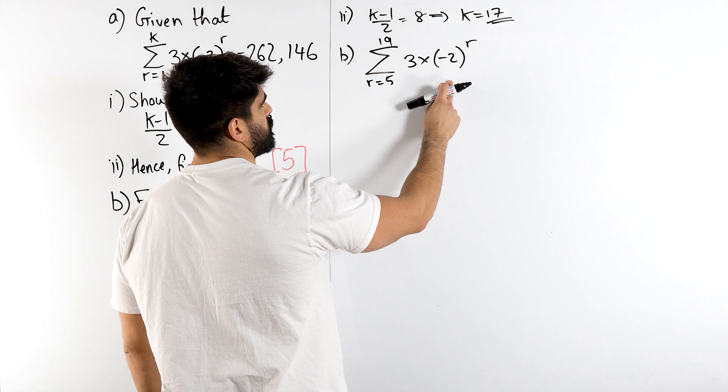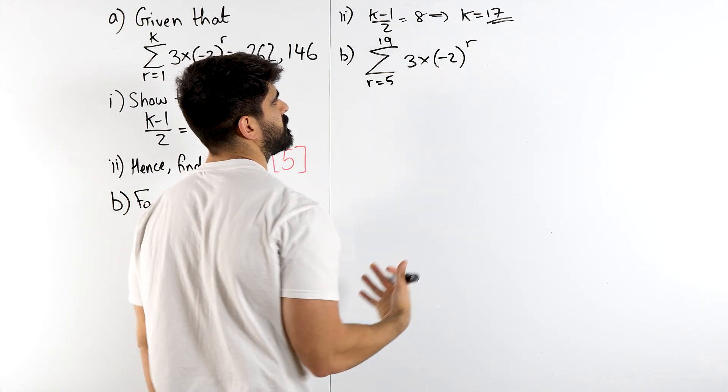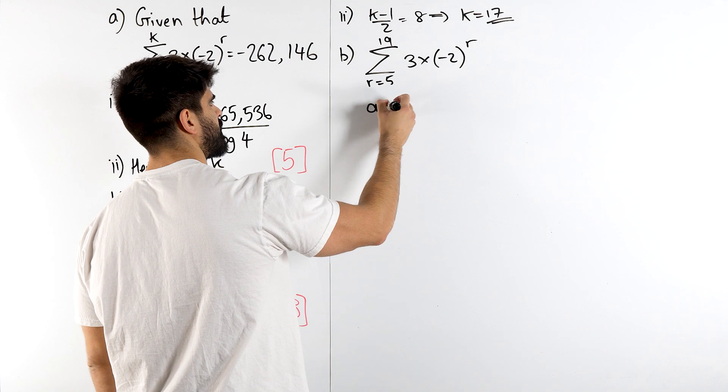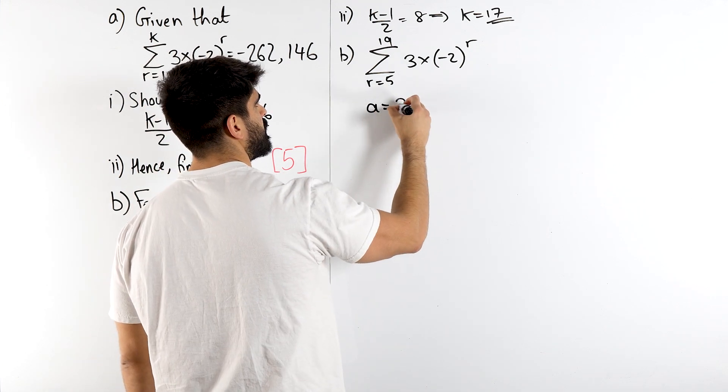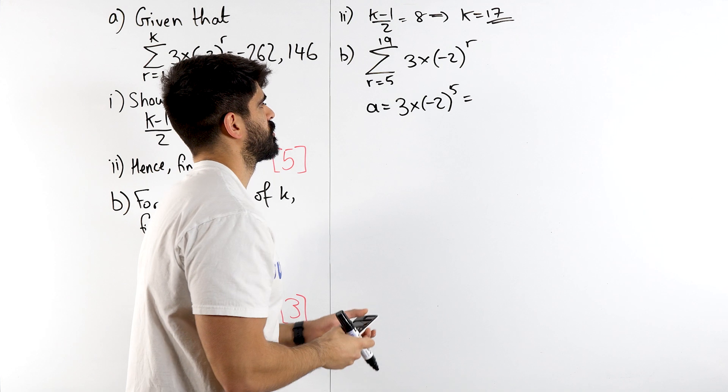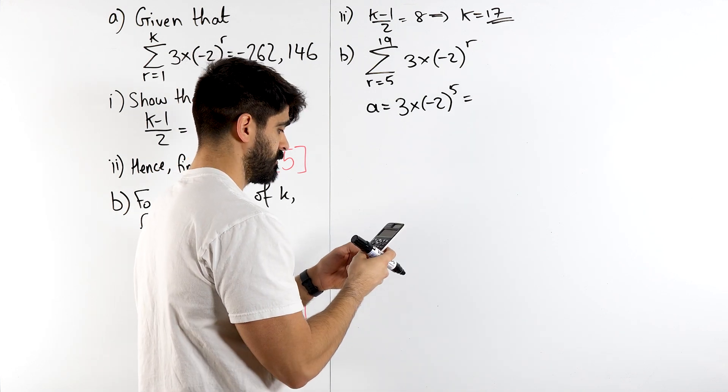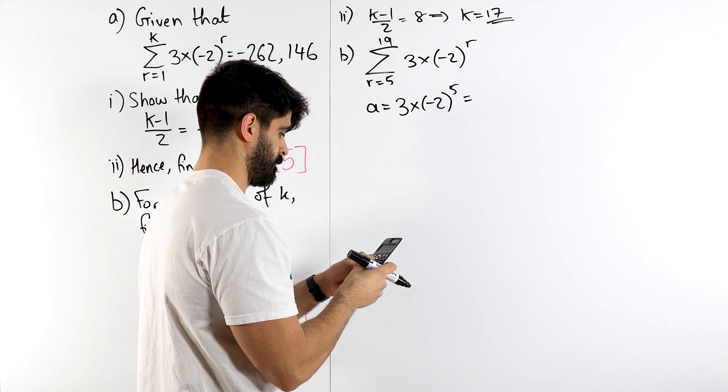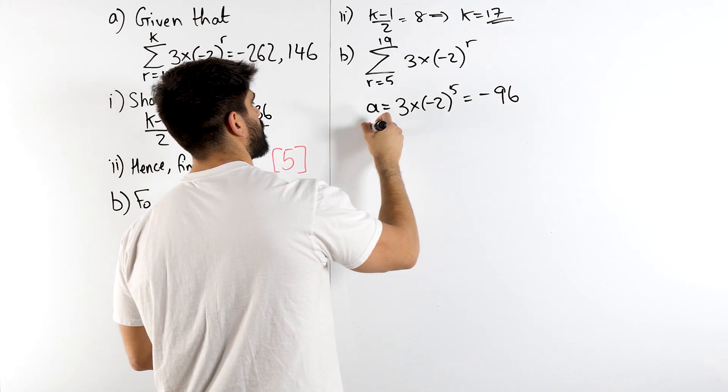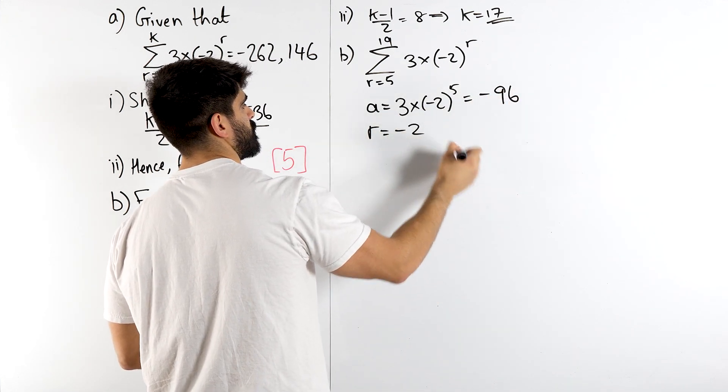So we're summing from the fifth term of the sequence. Now you just sub in 5 to find the first term of what you're summing. So my first term in this sequence is 3 times minus 2 to the power of 5, which is 3 times minus 32, minus 96.